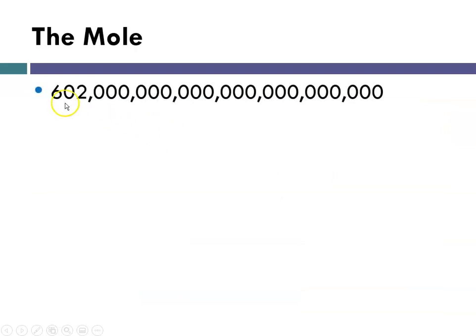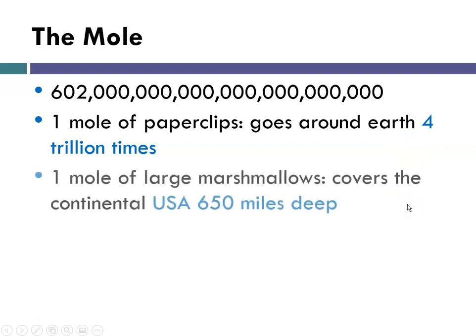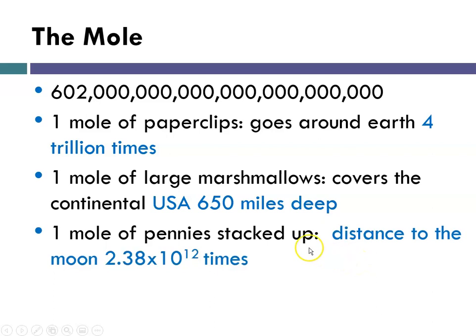So the mole has that many pieces in it, which is 6.02 times 10 to the 23rd, which is a fairly amazing number. So one mole of paper clips would go around the earth 4 trillion times. A mole of large marshmallows, not sure why this statistic is out there, but would cover the continental United States 650 miles deep. That's a lot of s'mores. And one mole of pennies stacked up would be the distance to the moon times 2.38 times 10 to the 12th times. So you can see that this is a fairly large number.